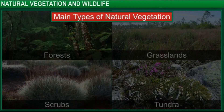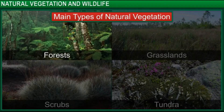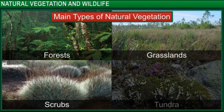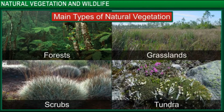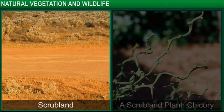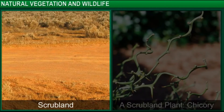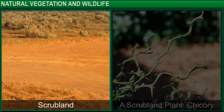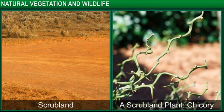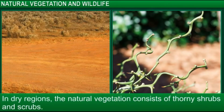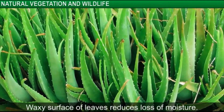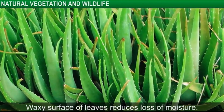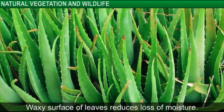The main types of natural vegetation found the world over are forests, grasslands, scrubs, and tundra. In dry regions, the natural vegetation consists of thorny shrubs and scrubs. The plants typical to such areas have long roots that go deep into the soil in search of water. The leaves are adapted to this climate as well — they have a waxy surface that reduces the loss of moisture through transpiration.